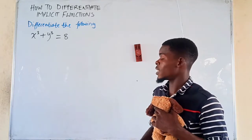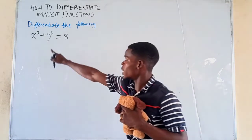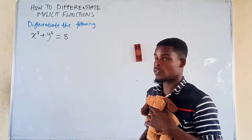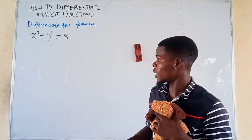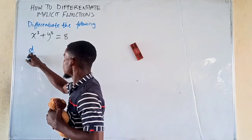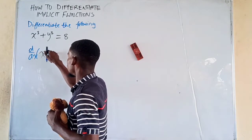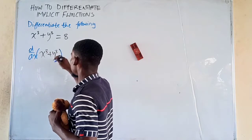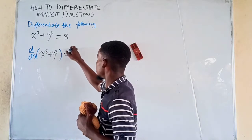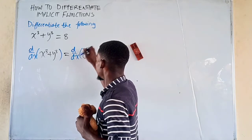To differentiate this — that is, to find the derivative of y with respect to x — keeping in mind that y here is a function of x, we just find the derivative of both sides. So I'm going to put it down: derivative with respect to x of x cubed plus y cubed, and that is equal to the derivative with respect to x of 8.